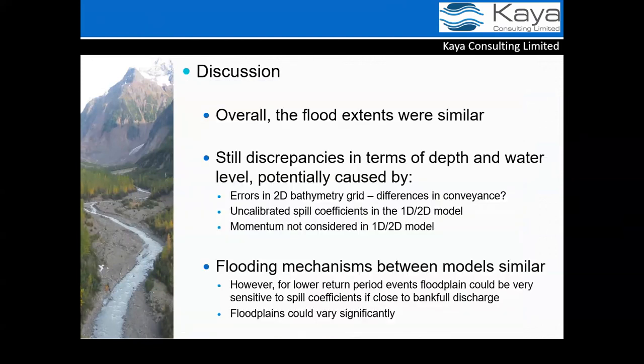Overall, the extents were similar but there are discrepancies in the depth and water level in the channel. Potential causes include errors in the 2D bathymetry, differences in conveyance, potentially uncalibrated spill coefficients in the 1D-2D model, or the fact that momentum isn't considered in the link lines. Overall, flooding mechanisms between the models were similar. For this 1-in-1000-year event, results were comparable; however, if the event were lower and right on the verge of the channel spilling, the models would be very sensitive to those spill coefficients and could produce significantly different floodplains.